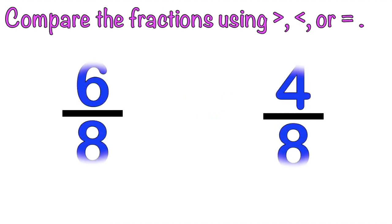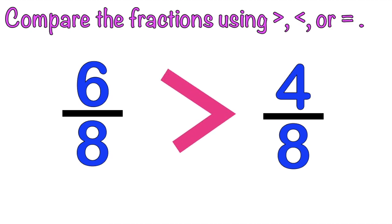How about if we have this one: 6-eighths and 4-eighths? The answer is greater than, because 6-eighths is greater than 4-eighths, because 6 is bigger than 4.